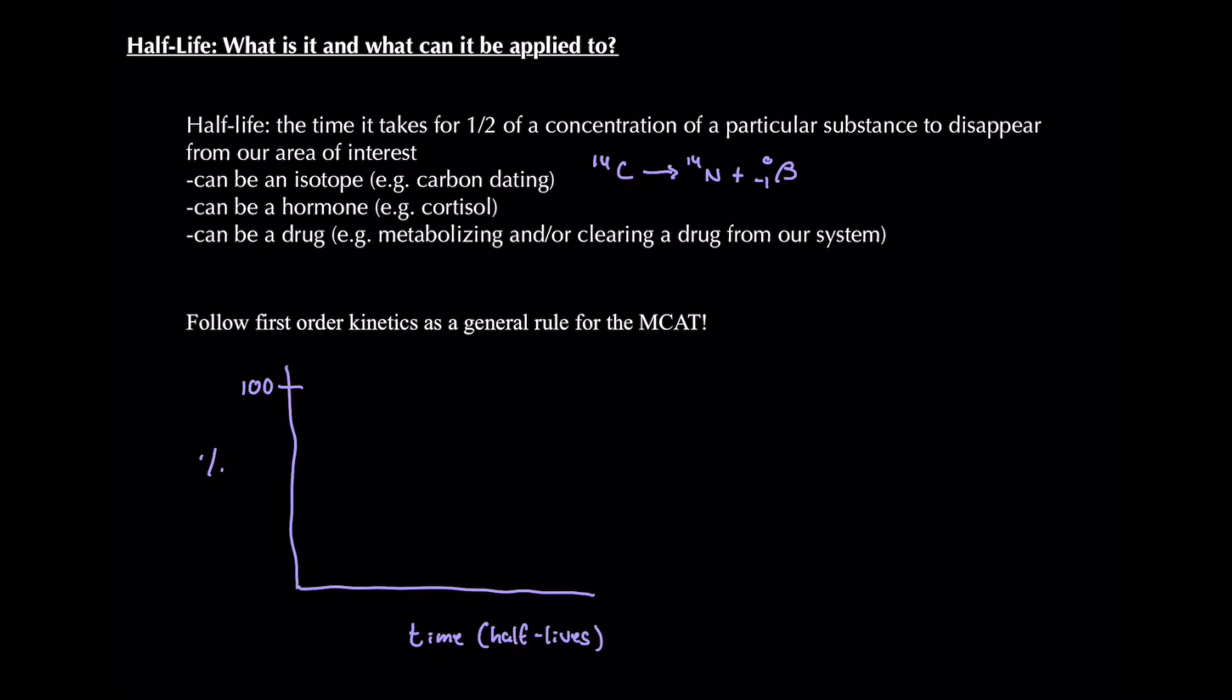So at one half-life, we're going to get half that 100%. We're simply going to go to 50%. So that's our first dot, or our second dot, I suppose. And then in our second half-life, we are going to have that 50, so now we'll be at 25% of what we originally had. And in our third half-life, we are going to have 12.5%, etc.